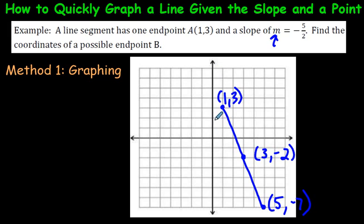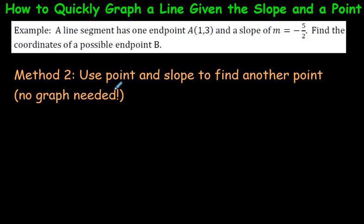Could you also go up this way? Yes, you could. But this is probably the quickest. The 3, negative 2 is probably the closest end point. Now, what if you're given a slope and a point, but you're not allowed to graph? What if your teacher says you're not allowed to graph? Think about it this way. One end point is 1, 3. I'm going to use a different font here.